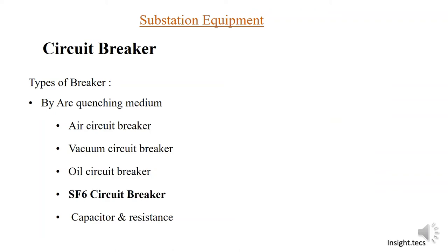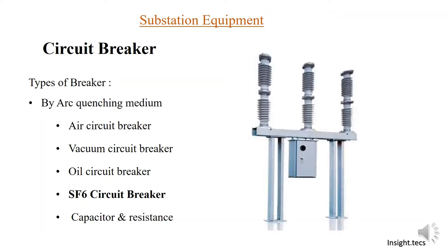The next category is the SF6 circuit breaker. The very compact design and use of SF6 gas as an arc quenching medium has made this type of circuit breaker very useful in the current time. Normally at every substation, SF6 gas circuit breakers are being used. As you can see in the image, these are the poles, this is a compact mechanism, and inside the poles SF6 gas is filled.